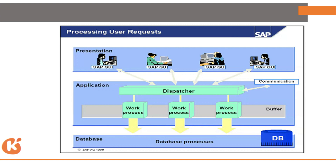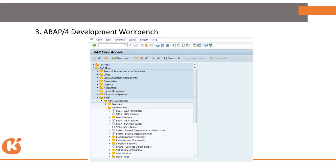This is the basic communication between the three servers. The role of the dispatcher is to receive the request and convert it into a work process, so that work process can communicate with the database layer.